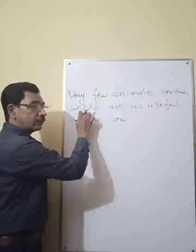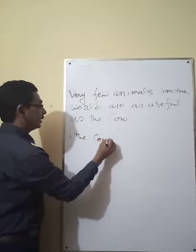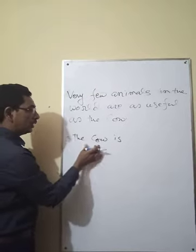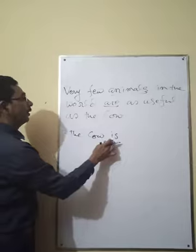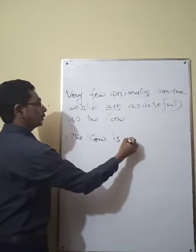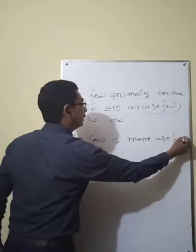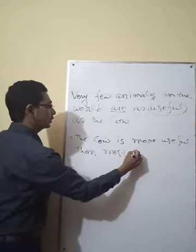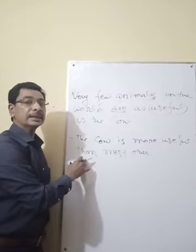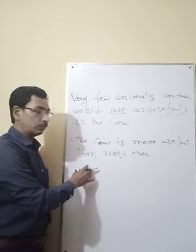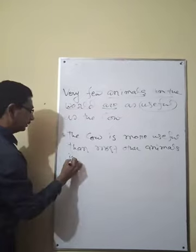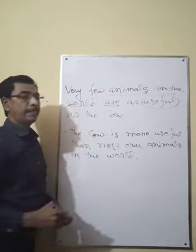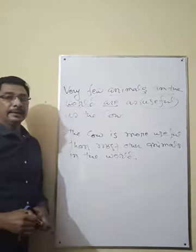Now I am going to change the sentence from positive to comparative. Again, write the object first: 'The cow is' — because the cow is singular. In case of 'no other,' you write 'than any other,' but in case of 'very few,' you write 'than most other.' So the sentence becomes: 'The cow is more useful than most other animals in the world.' This is the rule for changing positive sentences to comparative.